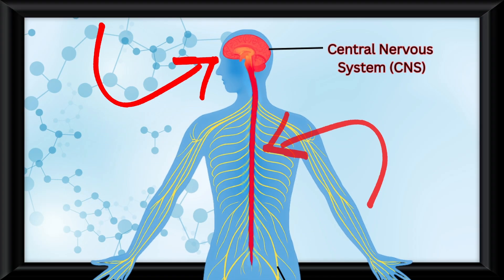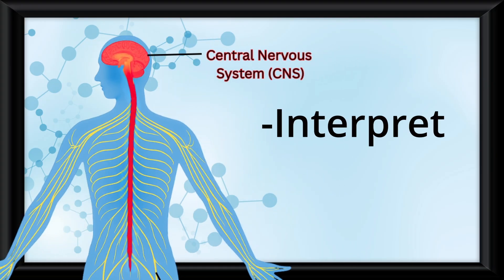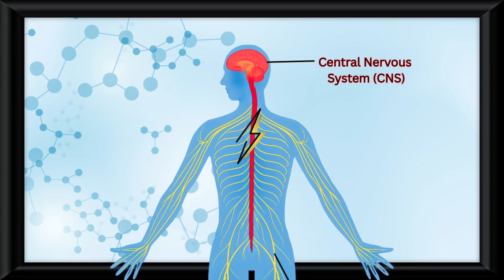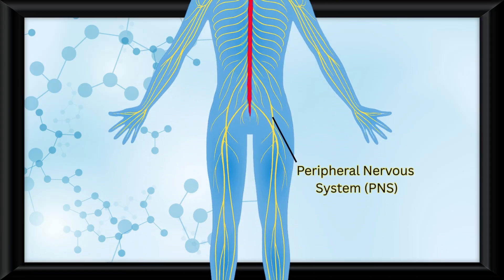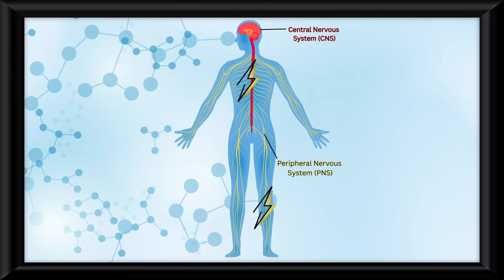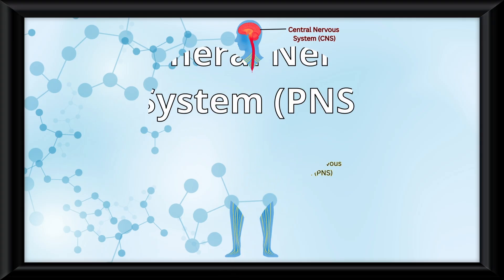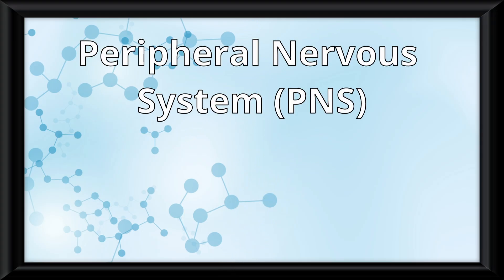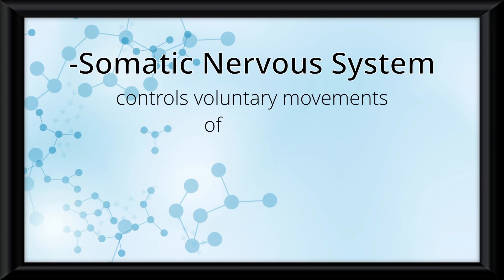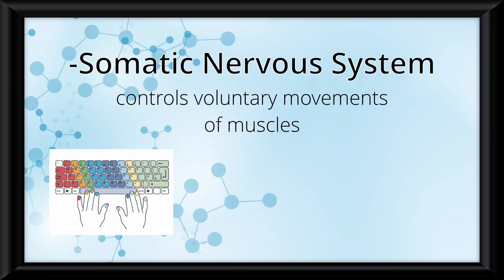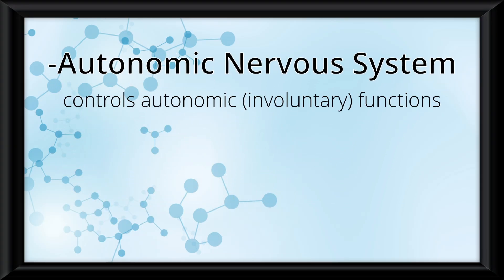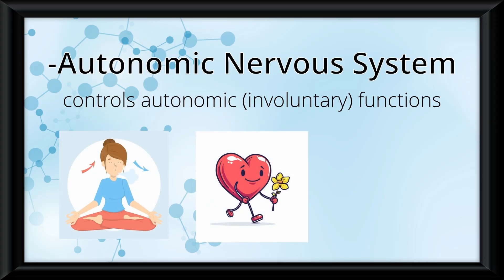The central nervous system houses the brain and the spinal cord. Its job is to interpret all the information that comes in and send out orders to the body — think of it as your control center. Once the message is sent from your central nervous system, it goes into the peripheral nervous system, which acts as your messenger system, carrying info in and out of your central nervous system. The peripheral nervous system includes two very important systems: the somatic and the autonomic nervous system. The somatic controls voluntary movements of muscles — stuff as simple as typing, walking, or picking something up. The autonomic controls autonomic functions — things you don't really think about, like your breathing, heartbeat, or digestion.